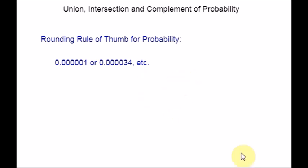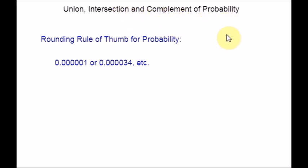This is all about union of events in probability. In our next session, we will start intersection of events and also discuss complement of probability. In case you have any query regarding this session, please let me know. See you in the next video.